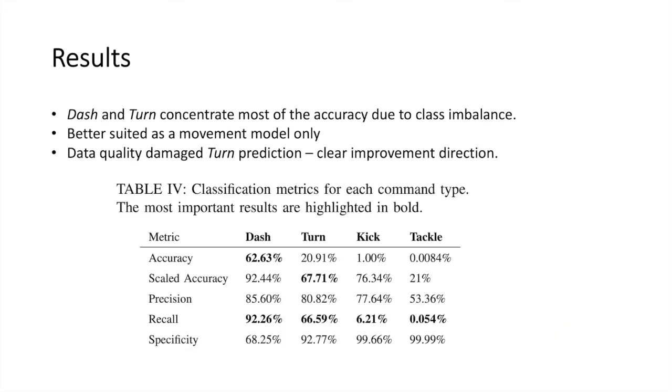Deep-diving into the classification results, we see that dash and turn commands concentrate most of the accuracy of the model, which means that the network is better suited for movement models only. We also see large space for improvement with tackle commands, likely because of data quality issues.